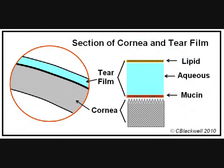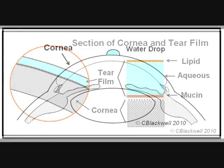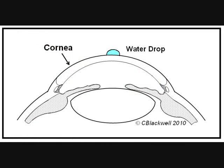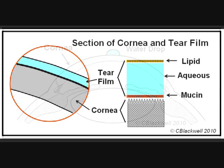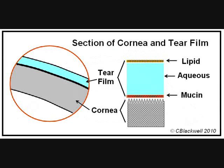Here is a magnified view of the cornea and tear film on the surface. The tear film has three layers — lipid, aqueous, and mucin — each of which serves a function. If you had a dry cornea and you put a drop of water on the surface, it would bead up instead of spread out. So there is a layer of mucin that allows water to spread out over the surface of the cornea. It is produced by the cells of the conjunctiva.